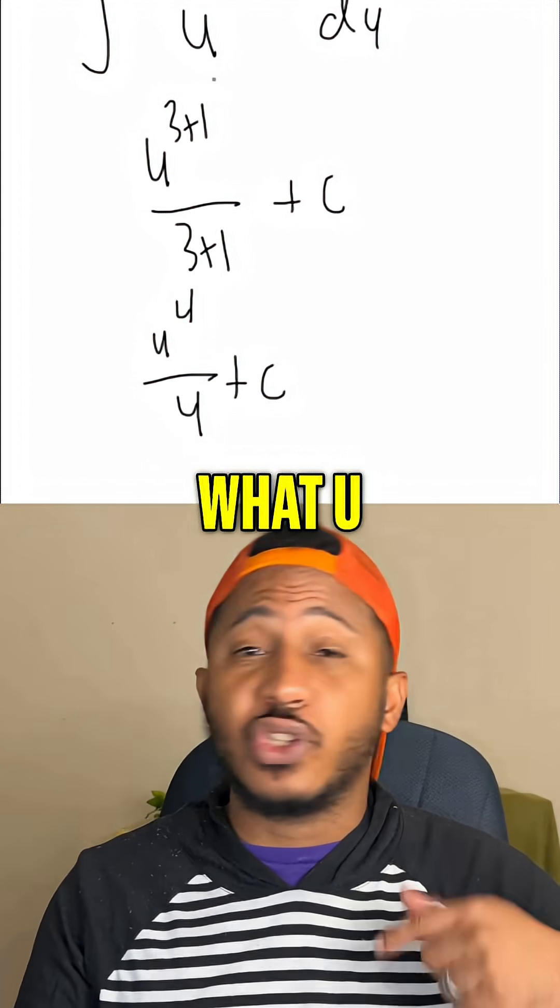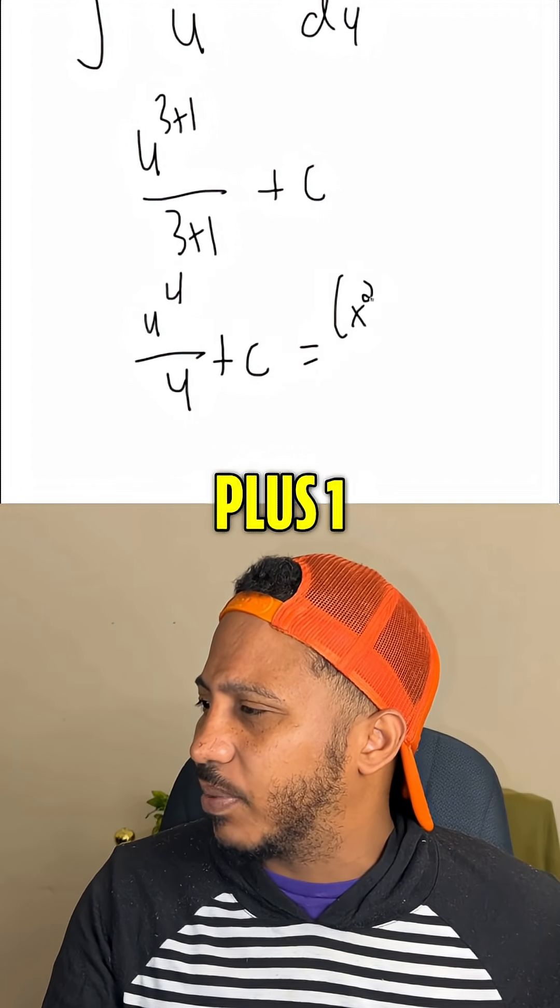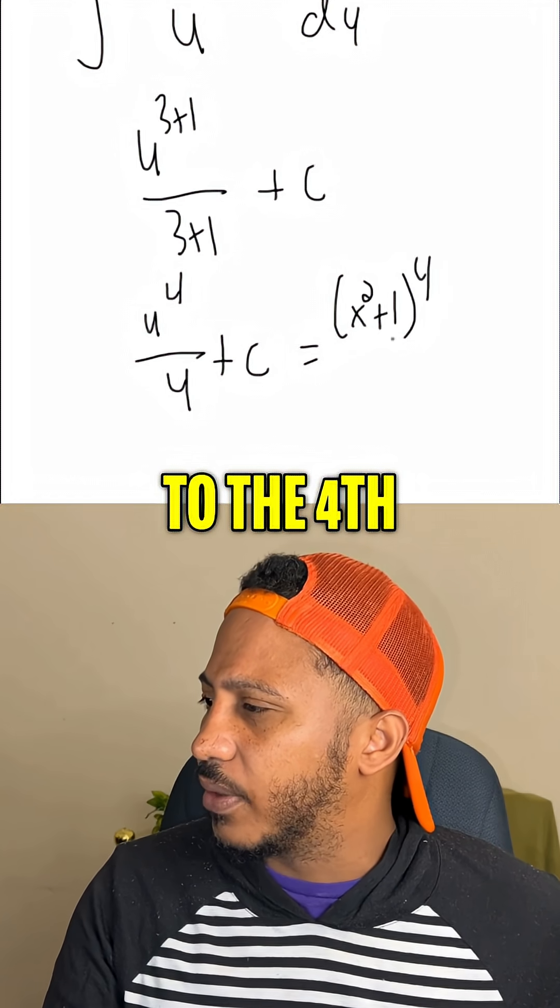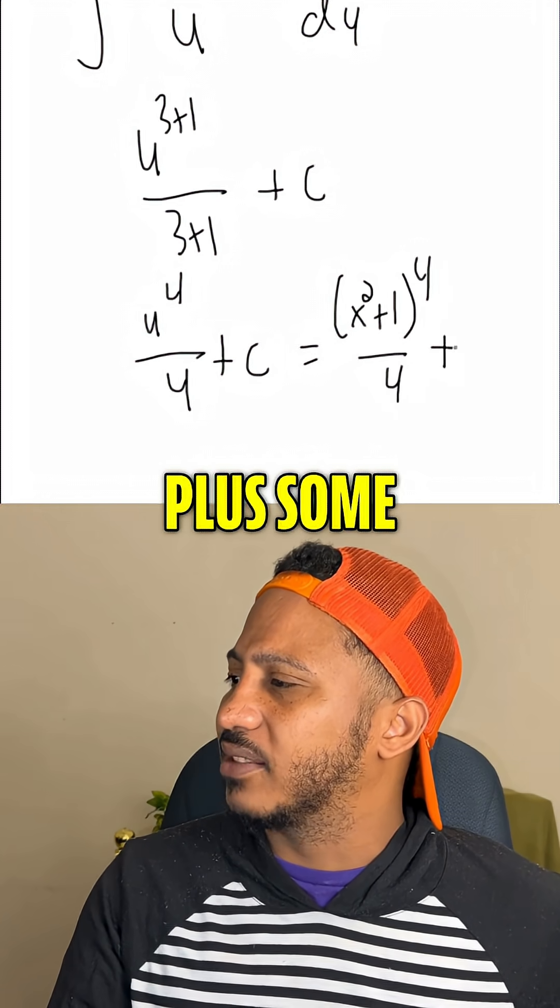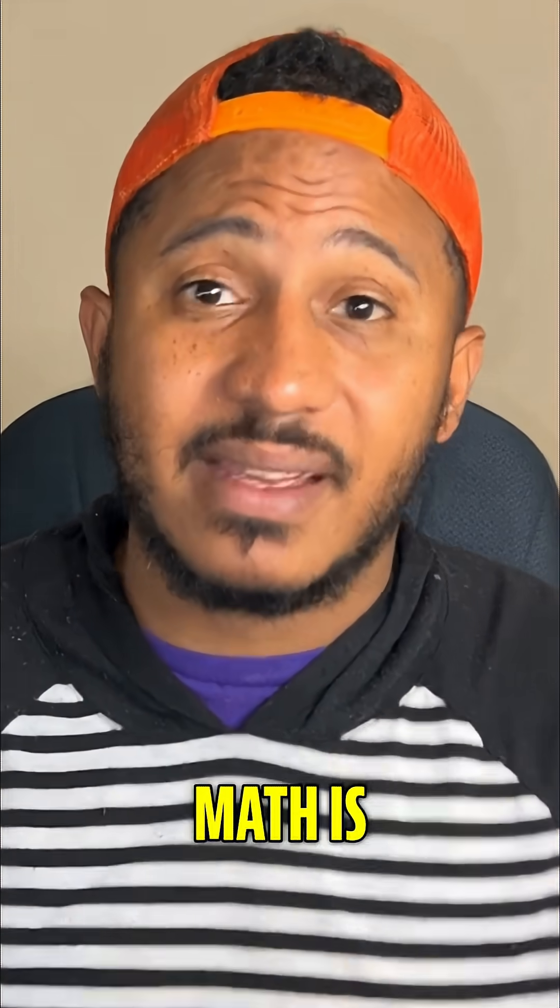And now we just back substitute what u was back into our answer. And so we end up having this is x squared plus 1 to the 4th all divided by 4 plus some constant with respect to x. Always remember, math is everywhere.